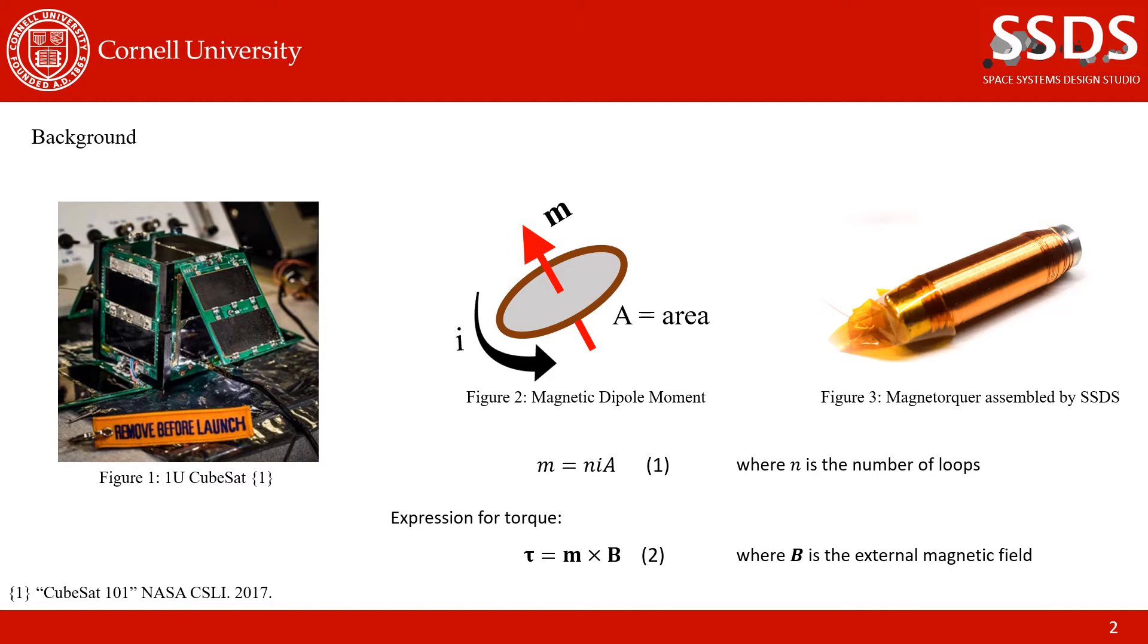One challenging capability to implement on these small platforms is attitude control, which we accomplish here using only magnetorquers. Magnetorquers typically consist of copper wire coiled around material with high permeability, and the concept behind them is the magnetic dipole moment. As seen here in Figure 2, this moment is normal to the coil and is generated by running current through said coil. The magnitude is dependent on the number of loops of wire in the magnetorquer, the amount of current run through the coil, and lastly, the cross-sectional area.